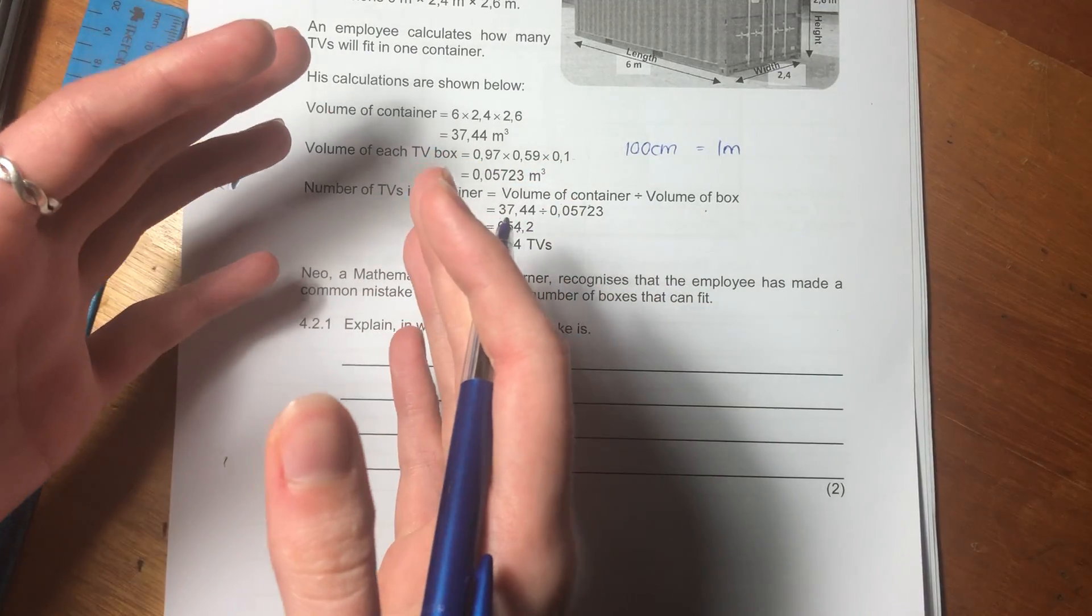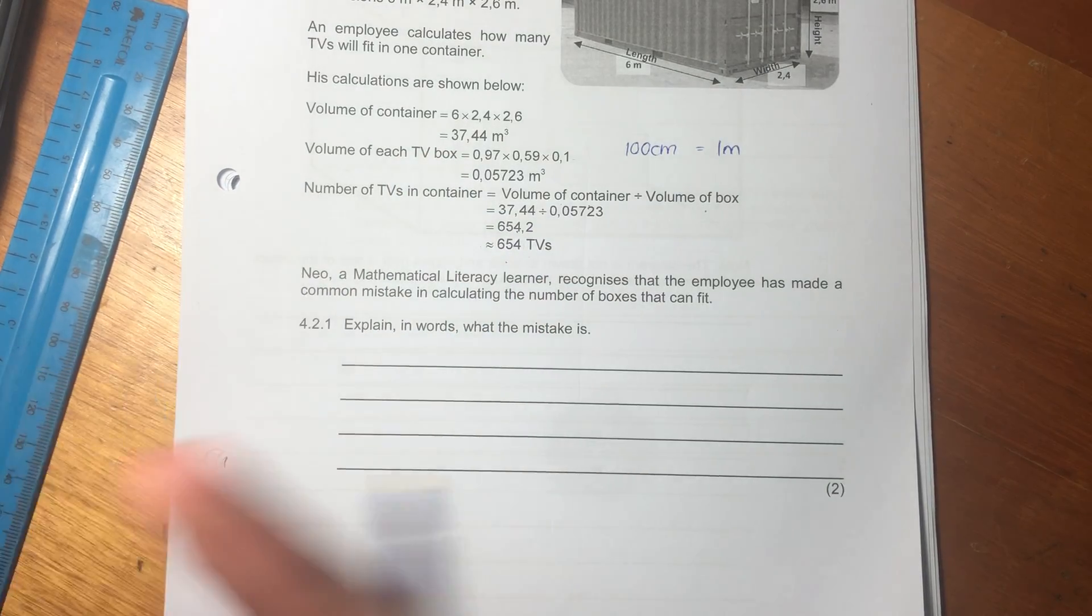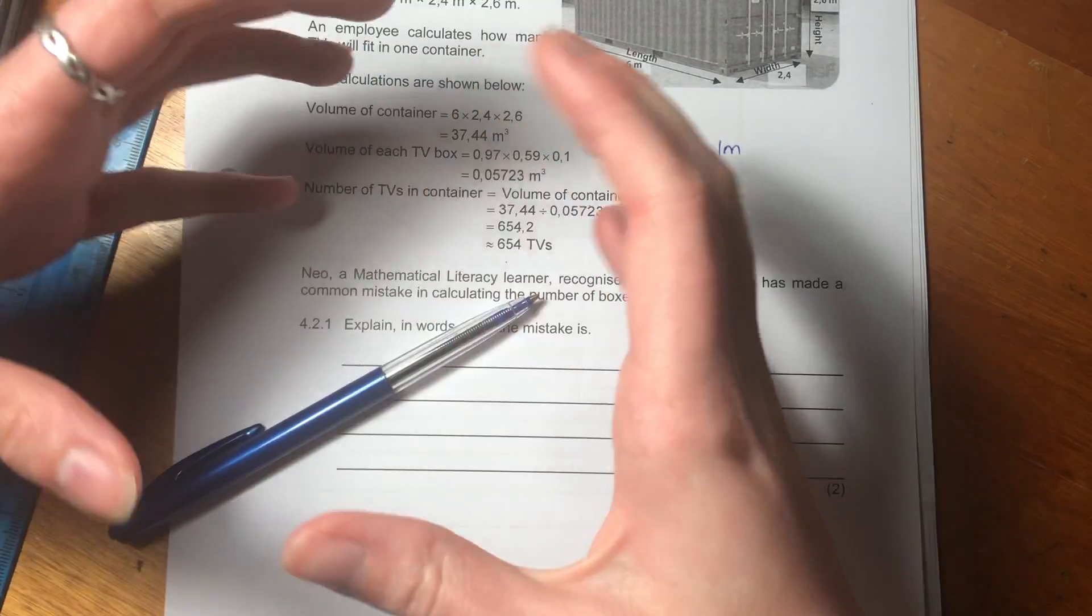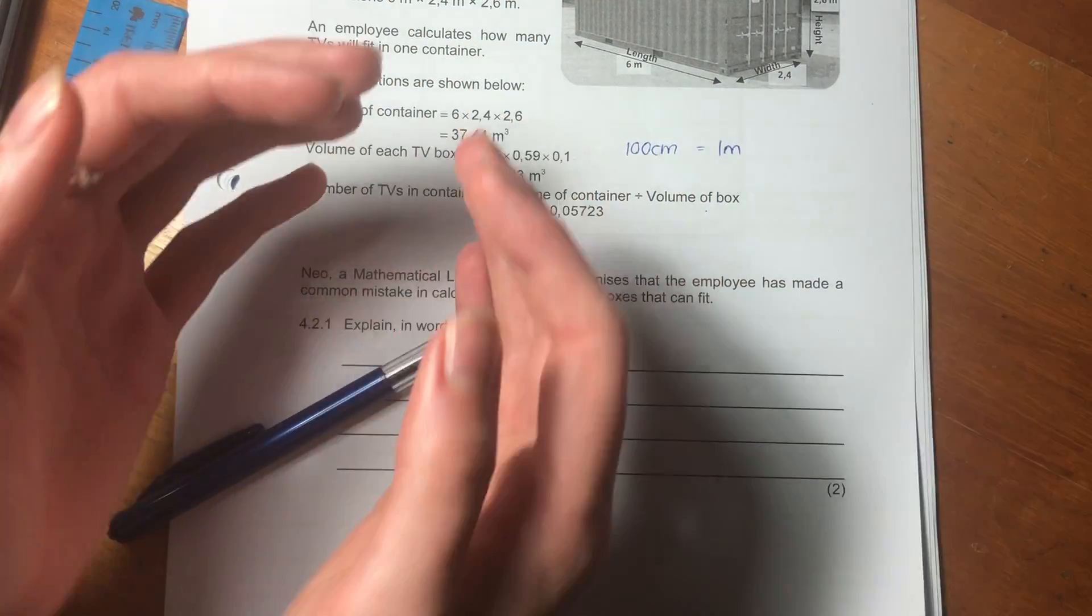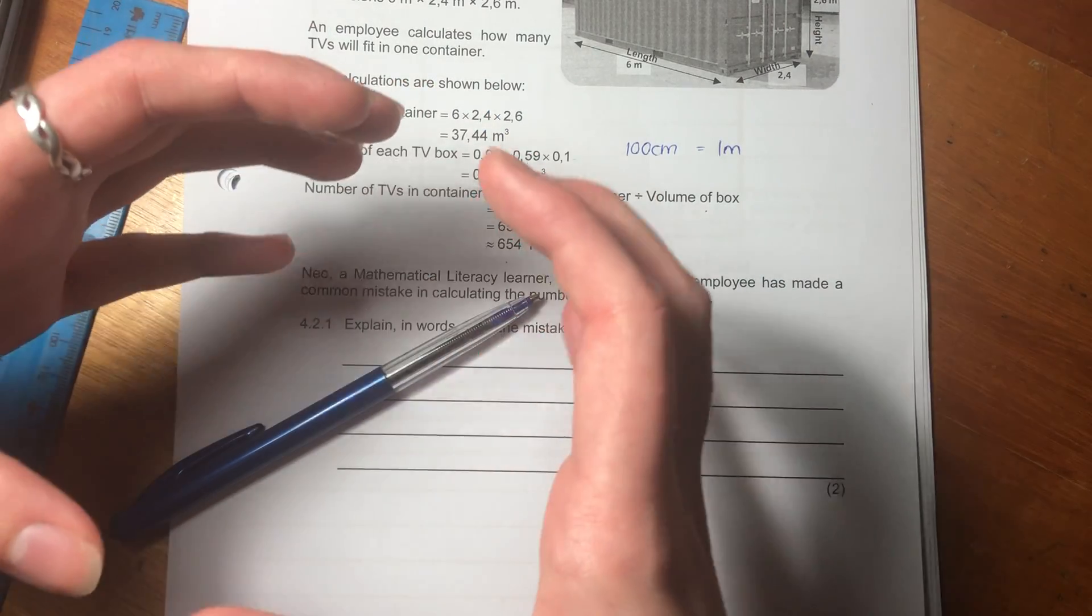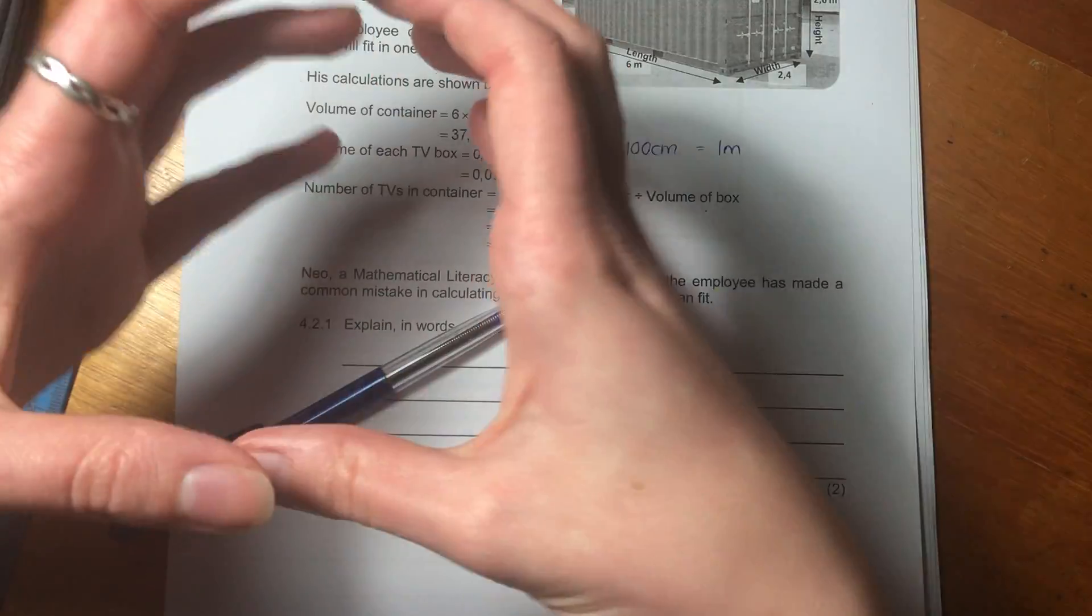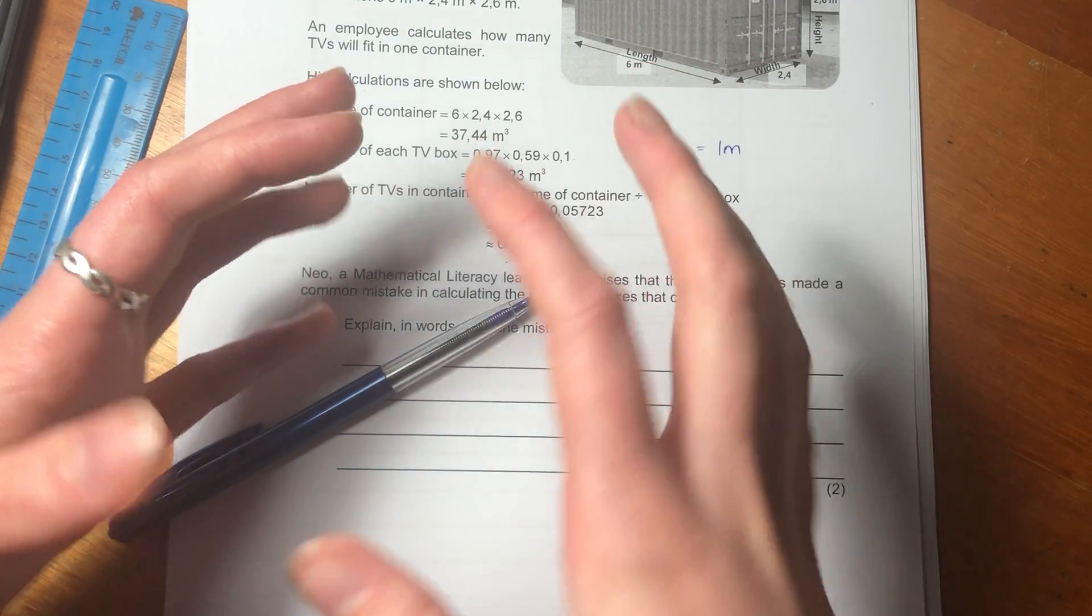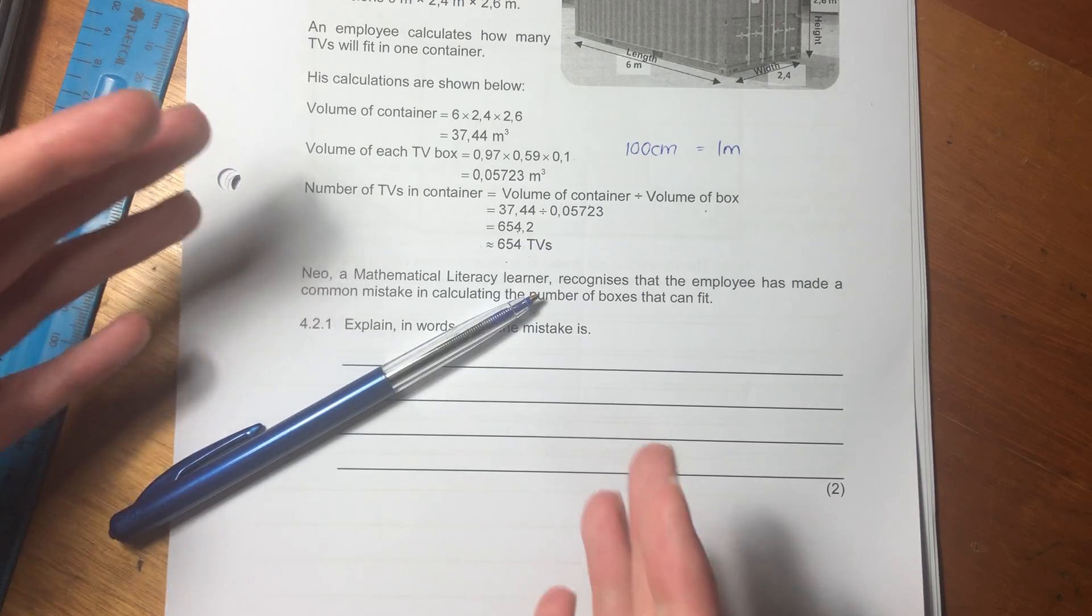This is a very interesting question, because most learners do think that you can just say the volume of something that you're trying to fit something into, divided by the volume of the thing you're trying to fit into it. But what you need to remember is that that only works for water. Water fits, water is one of those things where you pour it into a vessel. So if I pour water into a glass, it takes the shape of that glass, doesn't it.